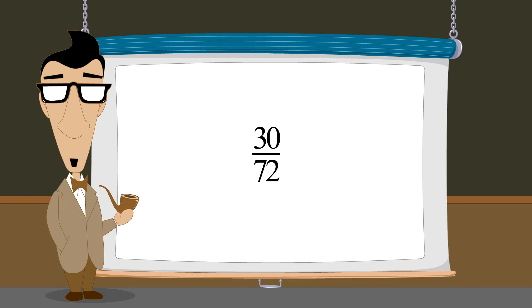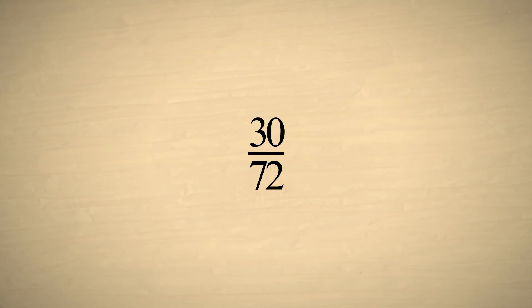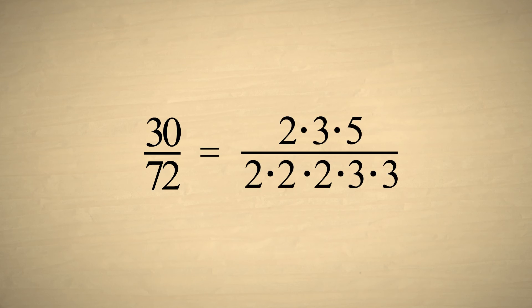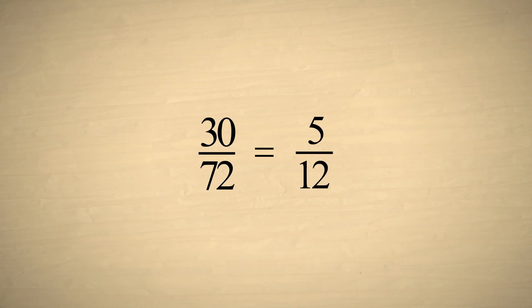Let's do a couple more examples. Let's reduce the fraction thirty-seventy-seconds. We first factor the top and bottom. This time, the bottom has three factors of two and two factors of three. However, since the top has only one two and one three, we can only cancel out a single factor of two and a single factor of three, which leaves us with five-twelfths.